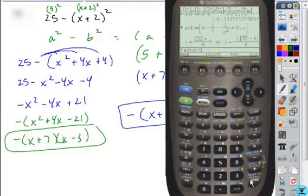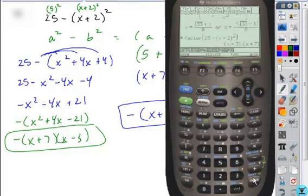Okay, so if you take and write your expression, again, exactly as it appears, so 25 minus parentheses x plus 2 quantity squared, you don't have to do anything else. Just close it off with a parentheses. And when you do, it'll show you all your factors, which confirms what we did by hand.